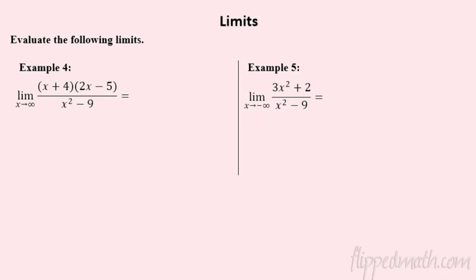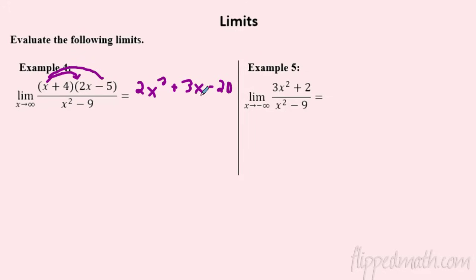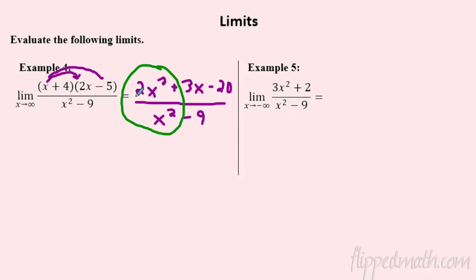The last part is just evaluating limits — maybe only one side. For example four, sometimes you have to clean up first, like foiling or double distributing. This expression is really 2x squared minus 5x plus 8x, which combines to 2x squared plus 3x minus 20, all over x squared. You may have to clean it up a bit because I'm really interested in those exponents.